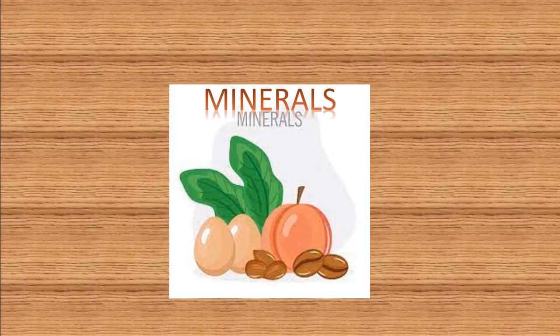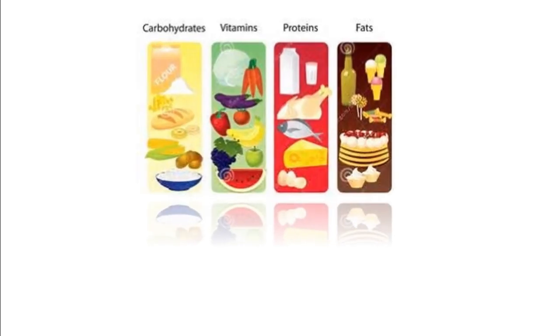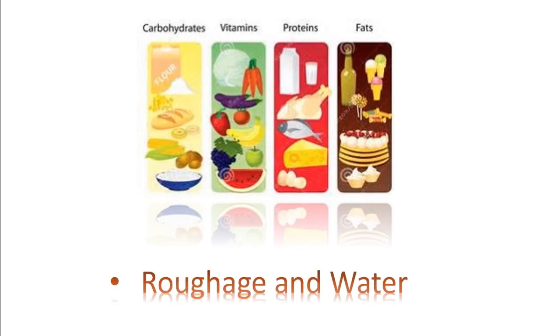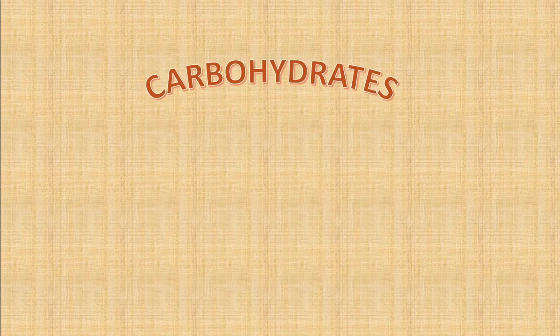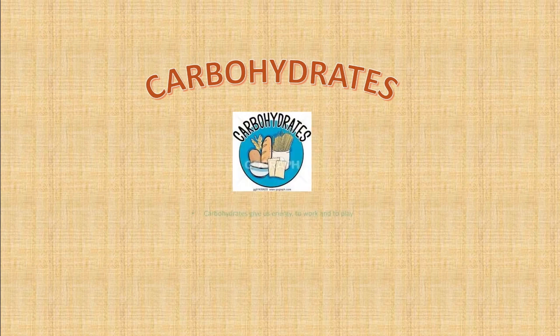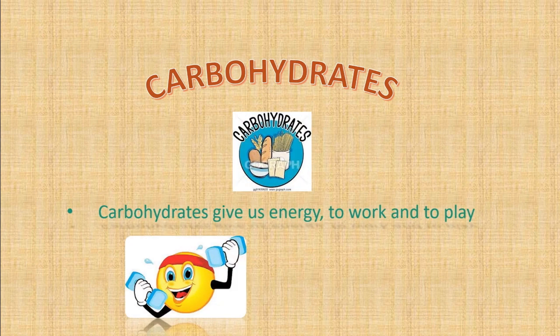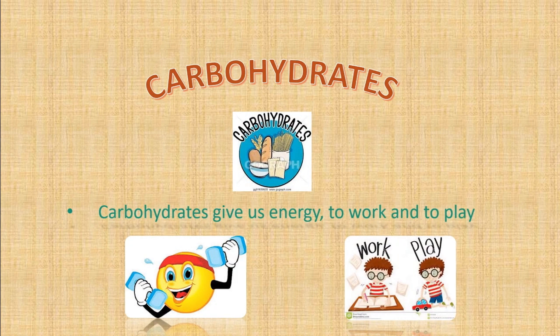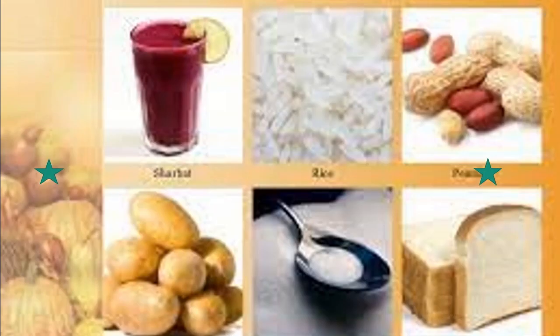These substances are called nutrients. The main nutrients found in food items are carbohydrates, proteins, fats, vitamins and minerals. Besides this, food also contains roughage and water. Now let us have a look at these nutrients in detail. First is carbohydrates — carbohydrates give us energy to walk and to play.